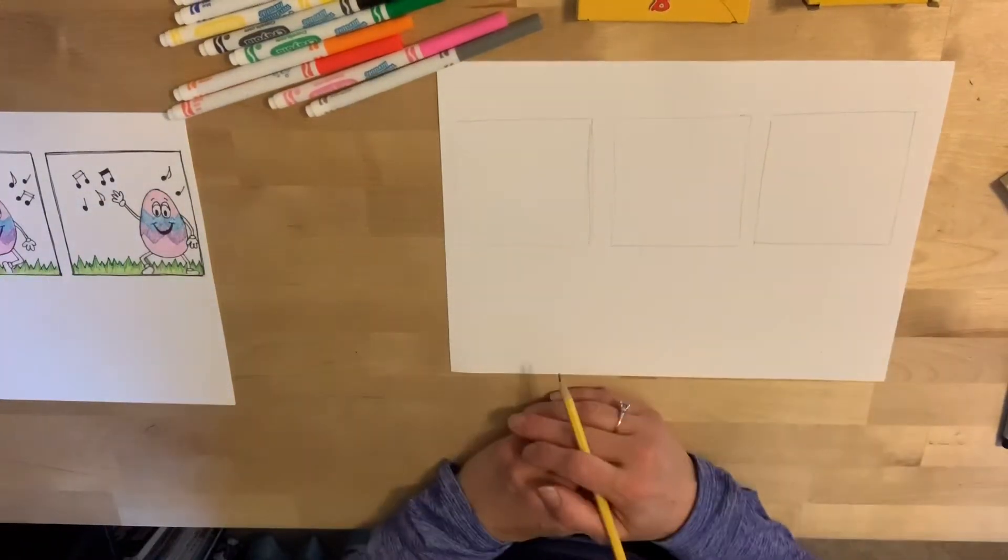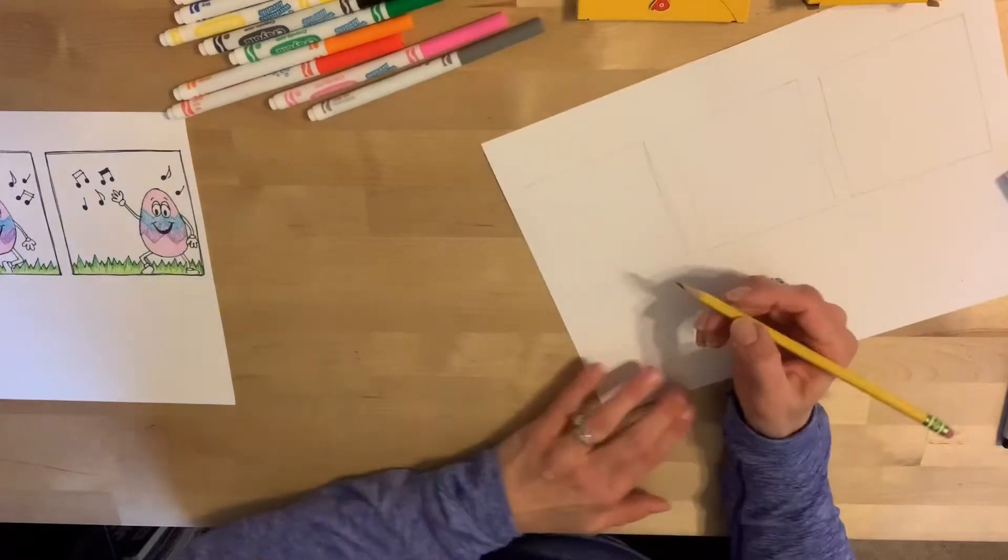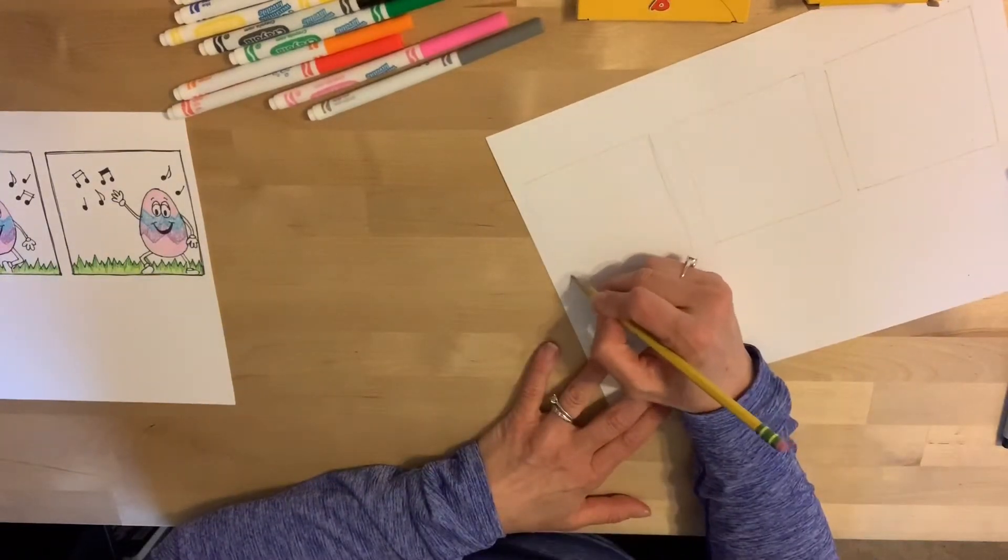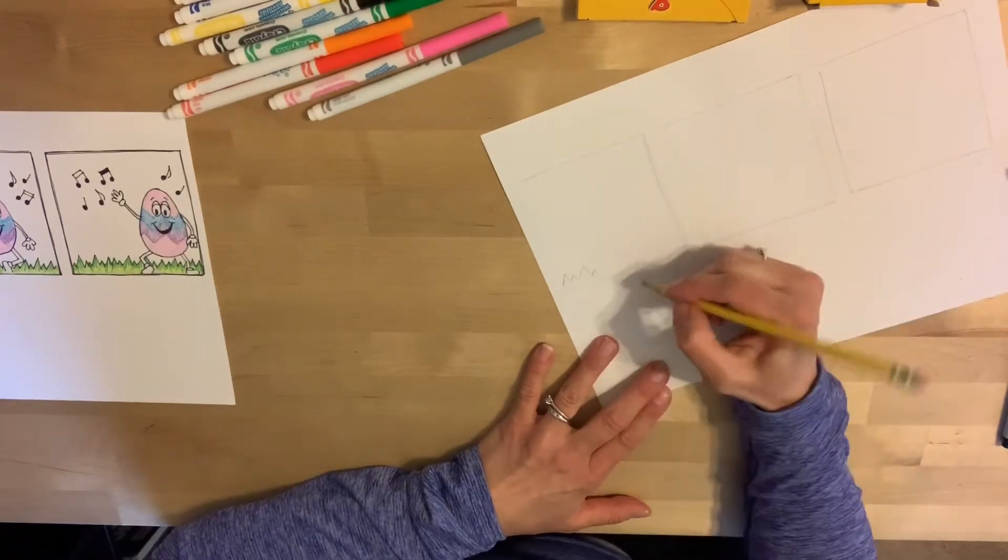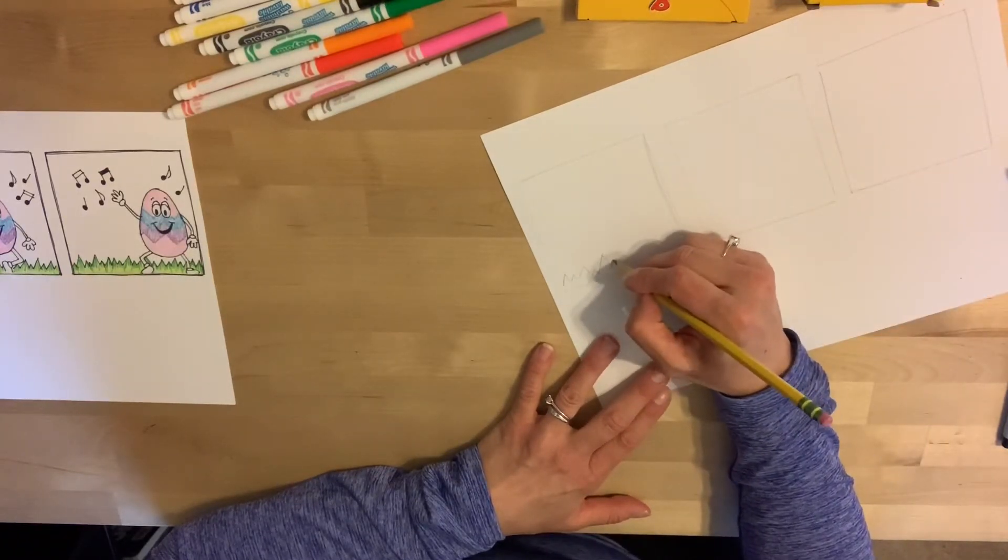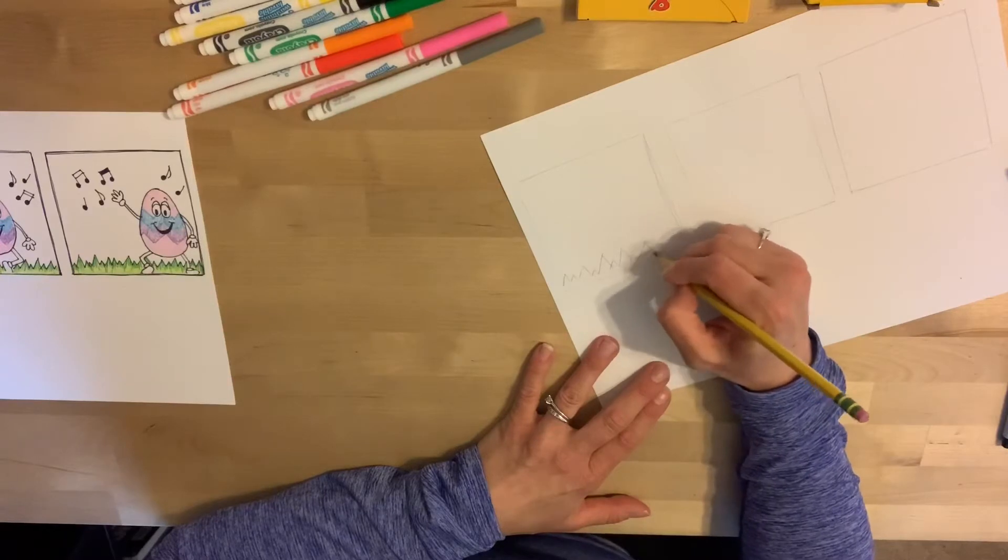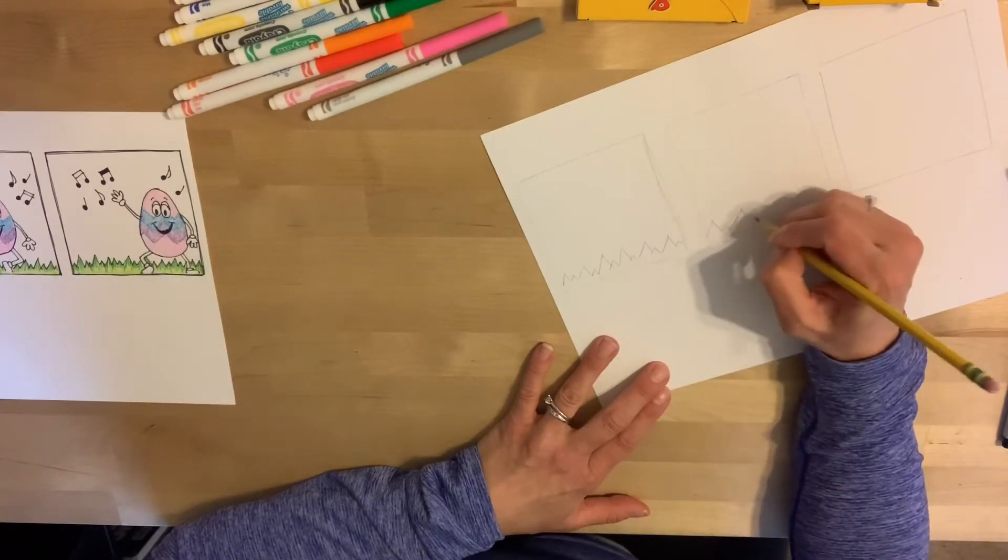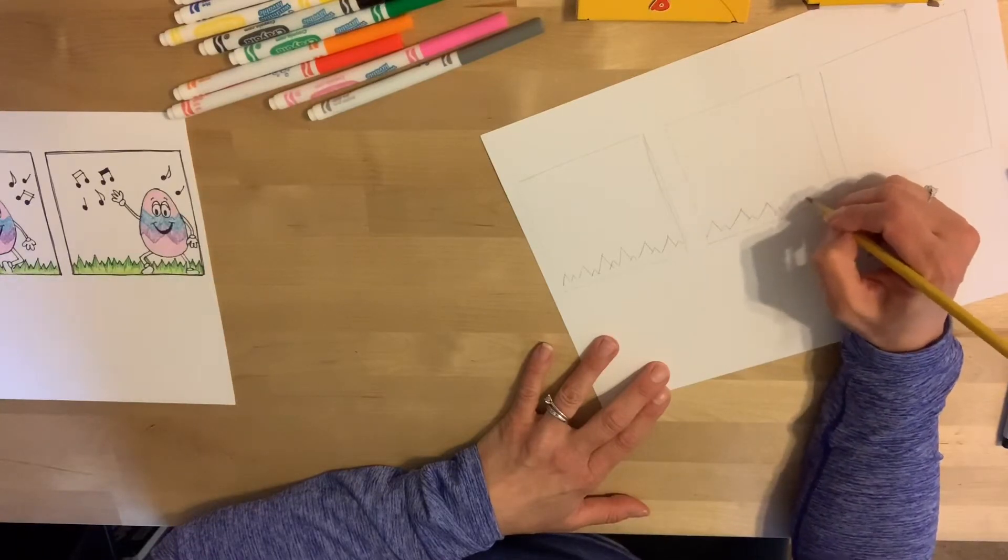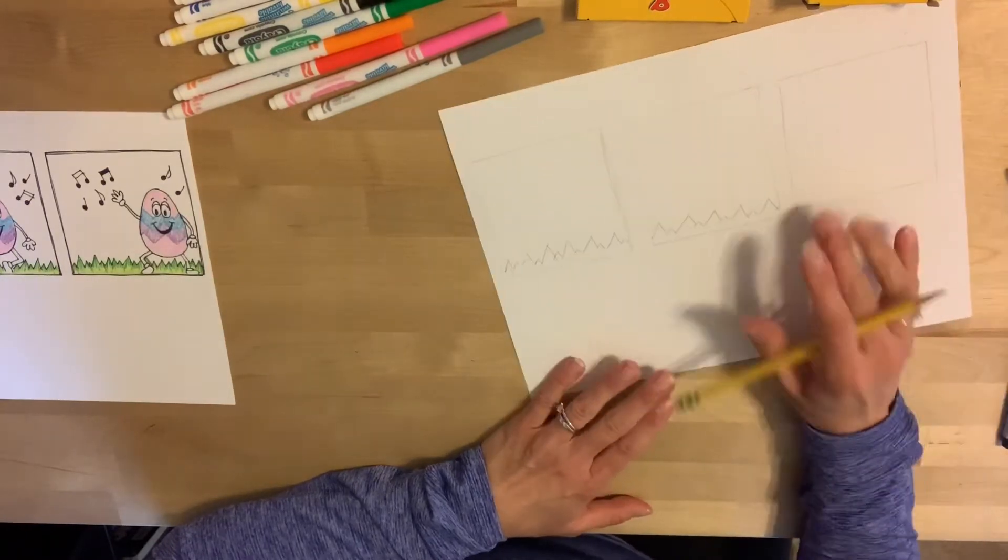Then you need to start drawing. So I think I'm just going to do a butterfly flying. Now the trick is you want each frame, these are called frames, each block is called a frame, you want each block or each frame to be pretty much the same.